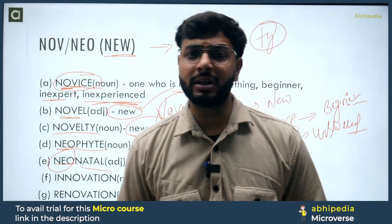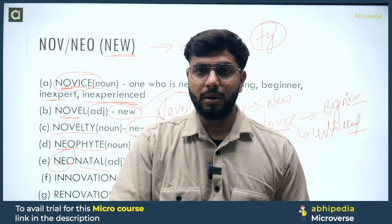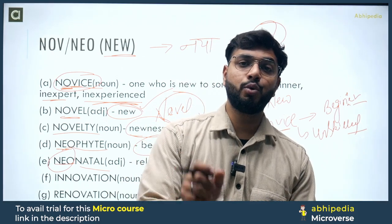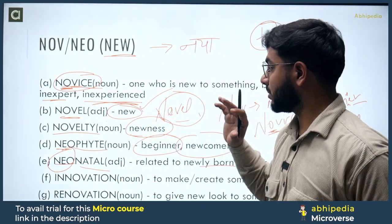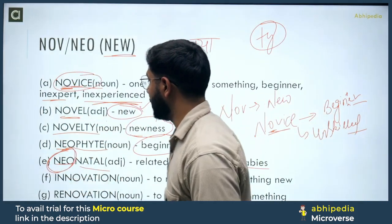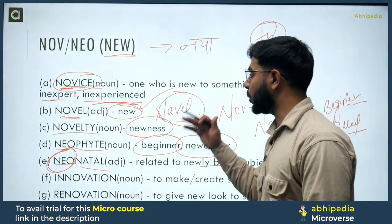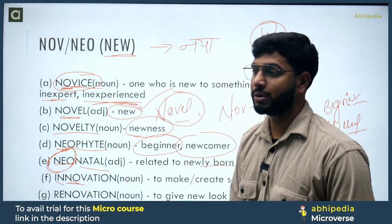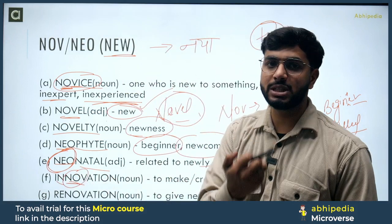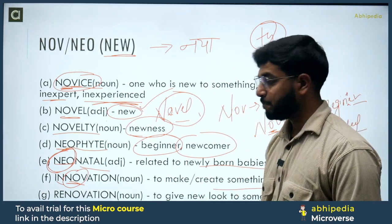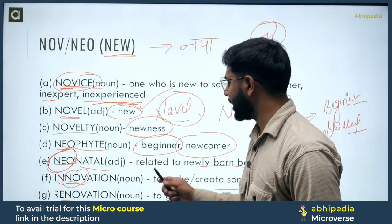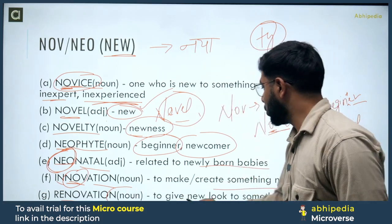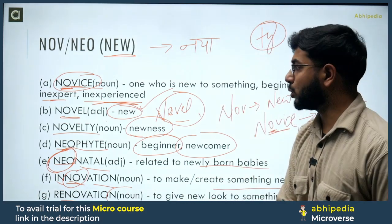How can you take advantage from this? When you go to the exam and face MCQ-based questions, you can eliminate options. If you see the root 'nov' meaning new, you can use that as a hint and eliminate other options easily. Innovation is another word — to innovate means to create something new. Then renovate — to renovate means to give a new look to something.